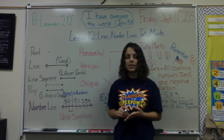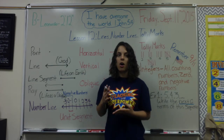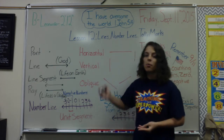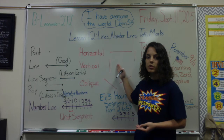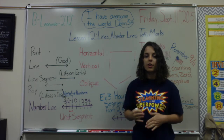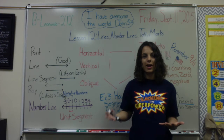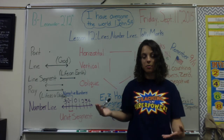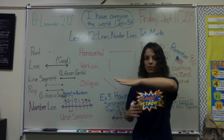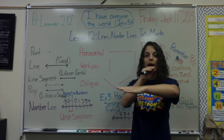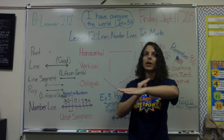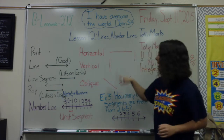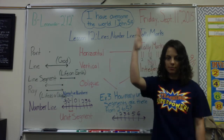The direction of lines, line segments, and rays does make a difference. We need to know about the direction that the lines are pointing or how they are laid out. We have horizontal and vertical. For horizontal, think of the horizon — I usually think of Lion King, where Mufasa and Simba sit on the cliff and Mufasa tells Simba to look out at their horizon. The horizon is horizontal — it's where the sky meets the land.